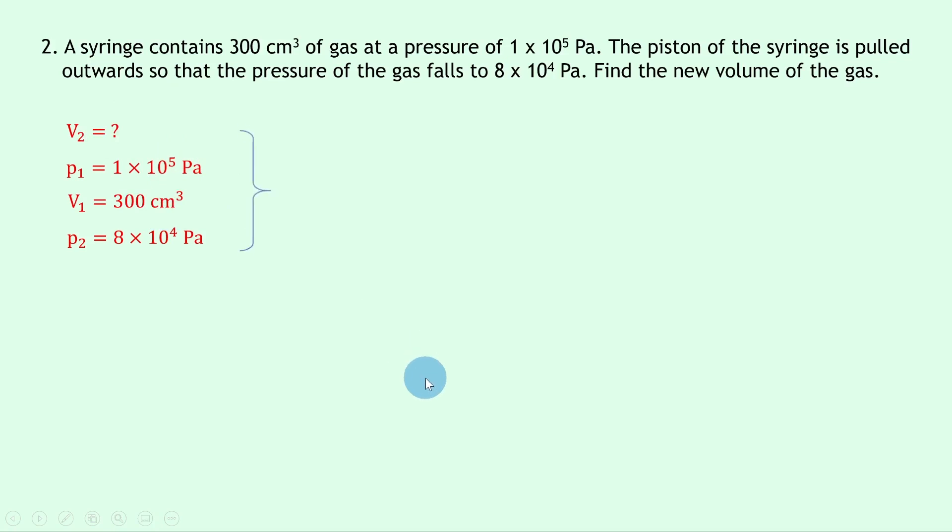So writing down our equation for Boyle's Law, we get P1 V1 equals P2 V2. Substituting in the numbers gives us 1 times 10 to the 5 times 300 is equal to 8 times 10 to the 4 times V2. Putting the left hand side into your calculator and then dividing by 8 times 10 to the 4 gives us V2 on its own, which should give you V2 equals 375 centimeters cubed once you put it into the calculator.